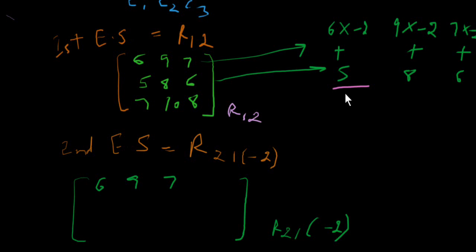6 times minus 2 is minus 12 plus 5 equals minus 7. 9 times minus 2 is minus 18 plus 8 equals minus 10. 7 times minus 2 is minus 14 plus 6 equals minus 8.